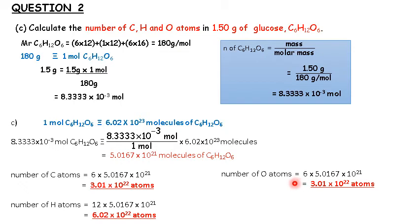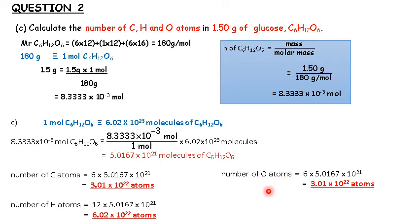For this kind of question, you must be clear about what is being asked and solve it step by step. First, find the moles of glucose from 1.5 grams. After that, find the number of molecules from that number of moles. Then only can you find the number of atoms for each element — carbon, hydrogen, and oxygen — based on the number of atoms per molecule of glucose.